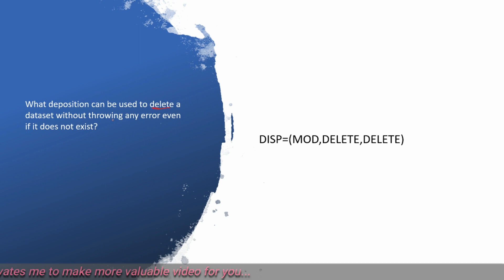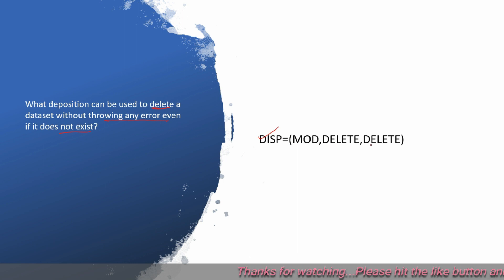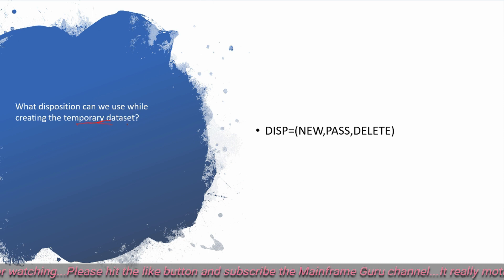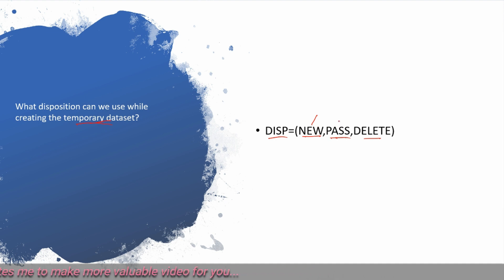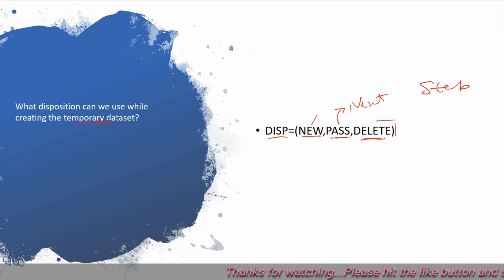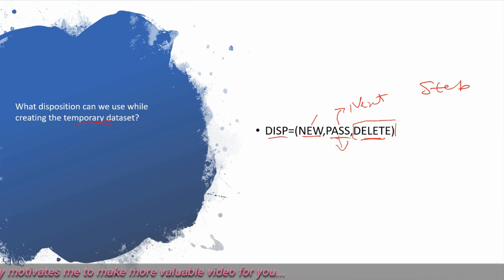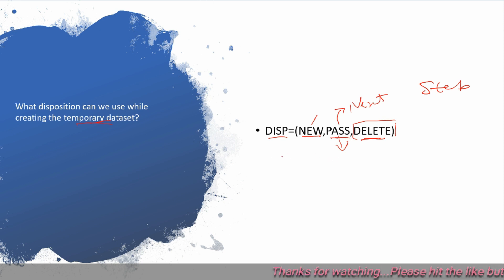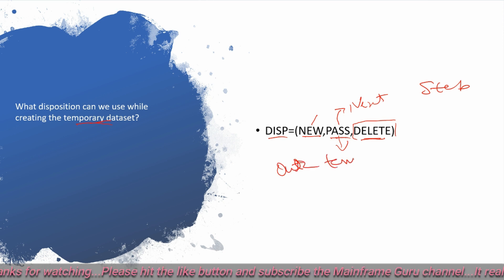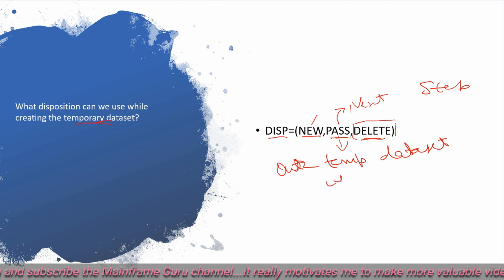What DISP can be used to delete a dataset without throwing any error even if it doesn't exist? You use DISP=(MOD,DELETE,DELETE). And what disposition can we use while creating a temporary dataset? You can use DISP=(NEW,PASS,DELETE). NEW creates the dataset, PASS passes it to the next step, and DELETE removes the dataset if the job is abandoned. The PASS parameter moves the temporary dataset to the next steps for use, and at the end of the job the temporary dataset will be deleted.